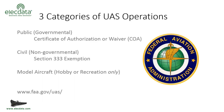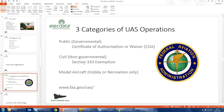There are different categories of UAS operations: public, civil, or model aircraft. Anyone on this call will not be able to operate under model aircraft rules. If you're a public entity, you'll need a Certificate of Authorization or waiver from the FAA. If you're a private entity, a Section 333 exemption is the usual route — which is what our company operates under for services and demonstrations. There are a lot of powerful systems out there with a lot of utility in the mosquito control arena.